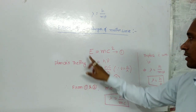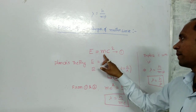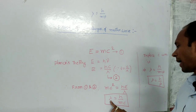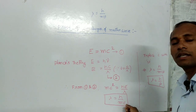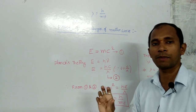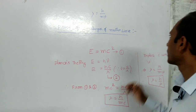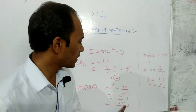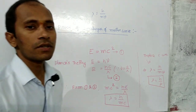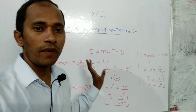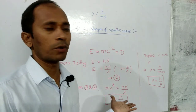From equations 1 and 2, since both represent energy, we can equate them: mc² equals Hc by lambda. Therefore, lambda equals H by m into C. Here C is the speed of light — the particle is moving with the speed of light. In general, replacing C with V for any velocity, lambda equals H by mV, which equals H by P. This is the simple proof for the wavelength of matter waves.